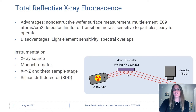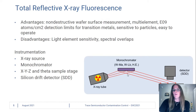In total reflective x-ray fluorescence, the advantages are it's a non-destructive measurement of the wafer surface, it's multi-element, we get detection limits for transition metals in the E9 atoms per centimeter squared, and it's sensitive to particles.